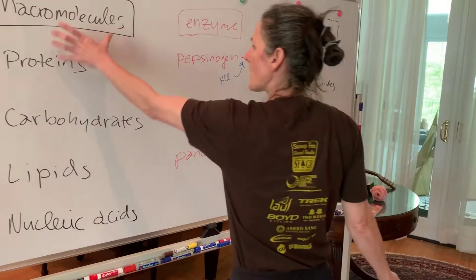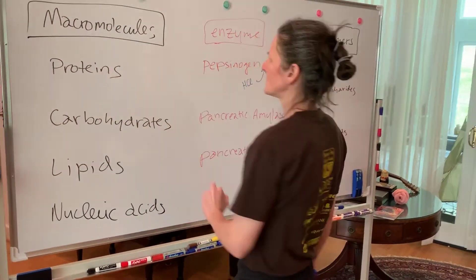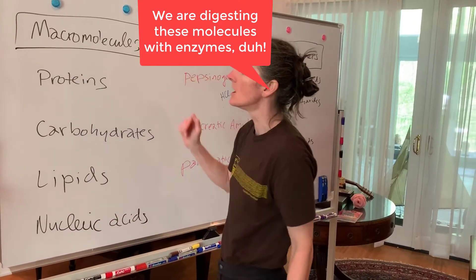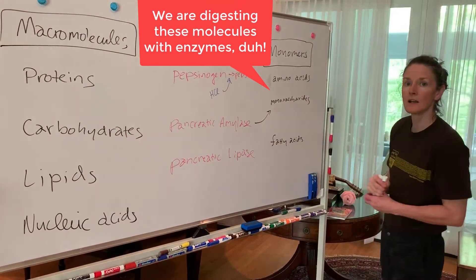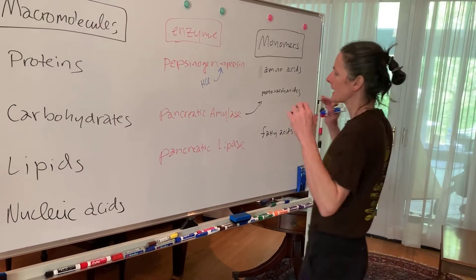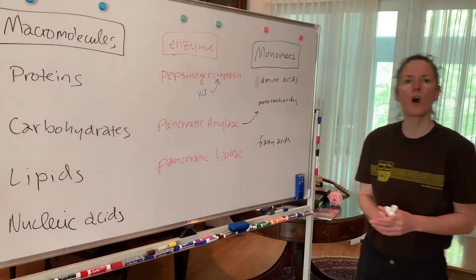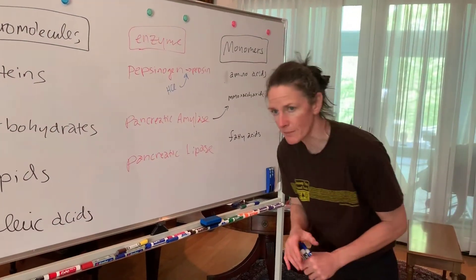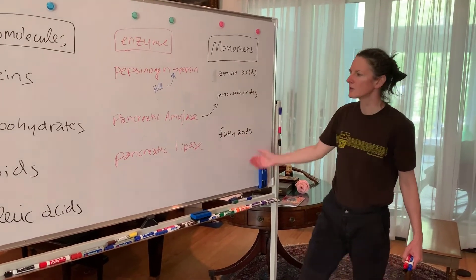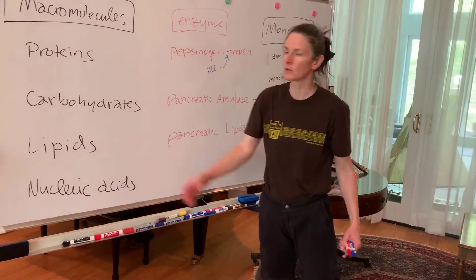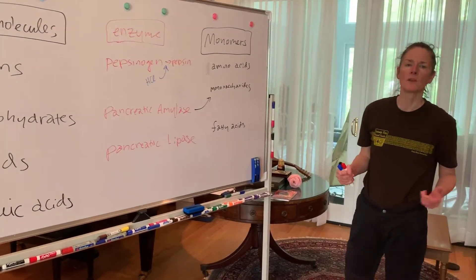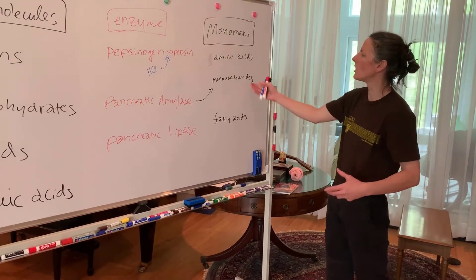Digestion is a catabolic process — we're taking large molecules and breaking them down into little pieces. Almost all enzymes for digestion are catabolic. Later, when we have those raw materials extracted from our macromolecules, our bodies can use anabolic enzymes to build these back up into desired products.